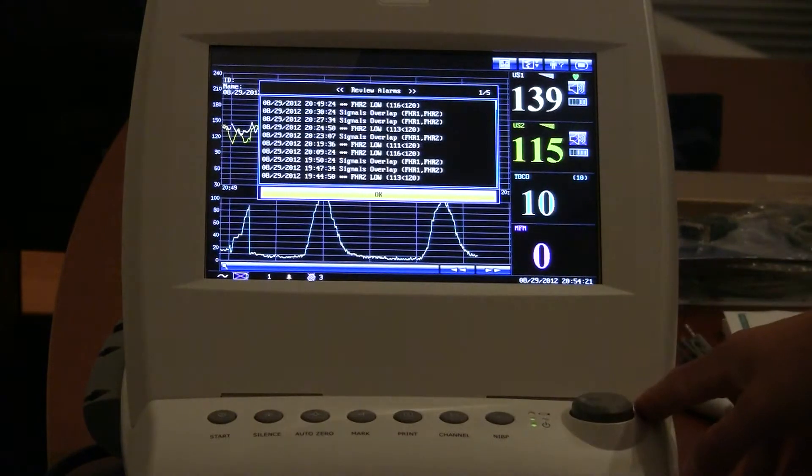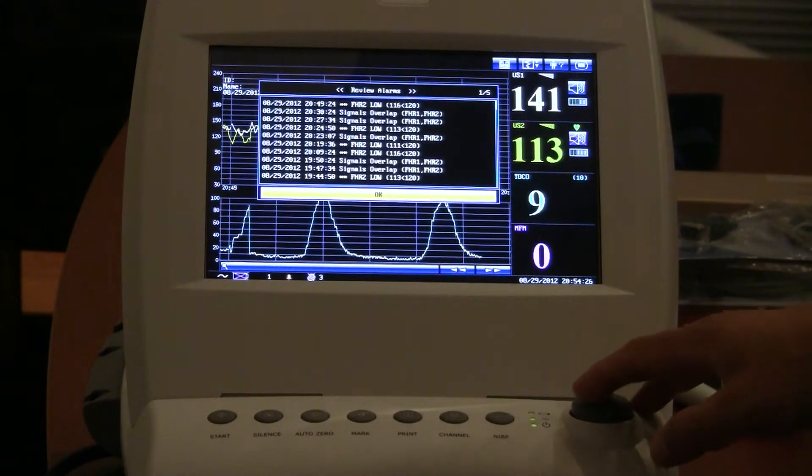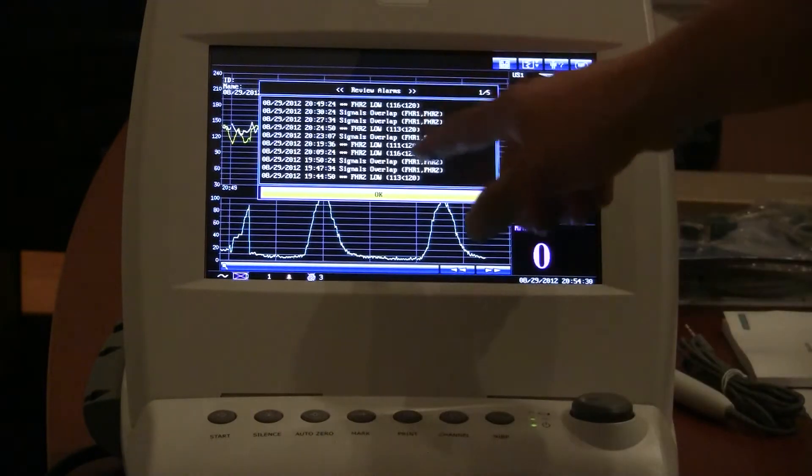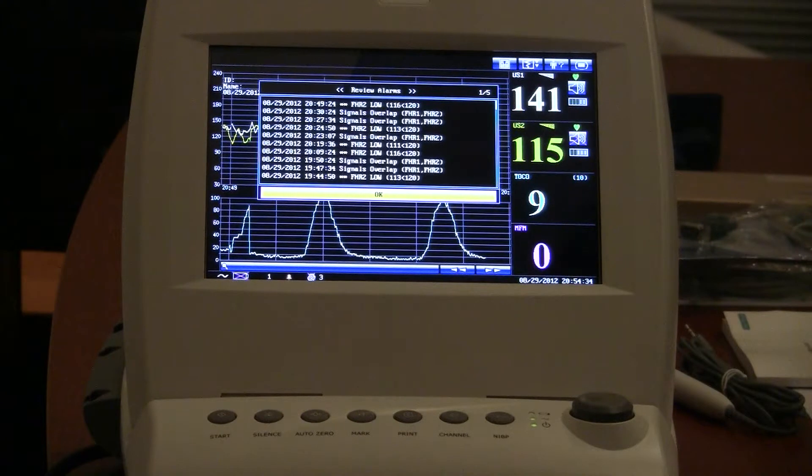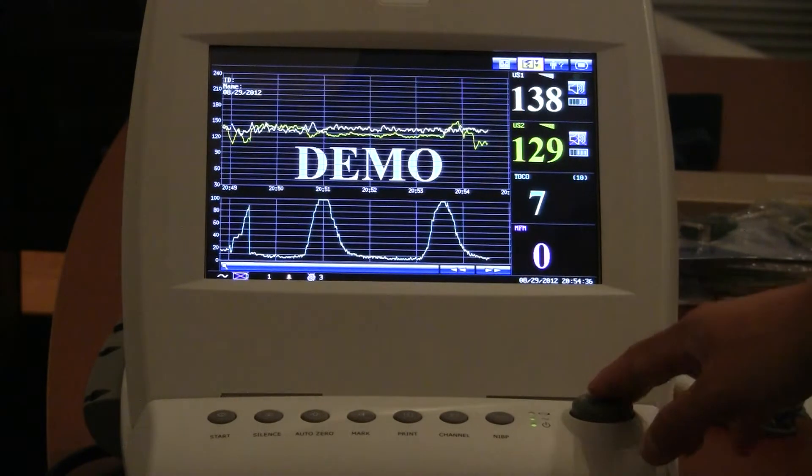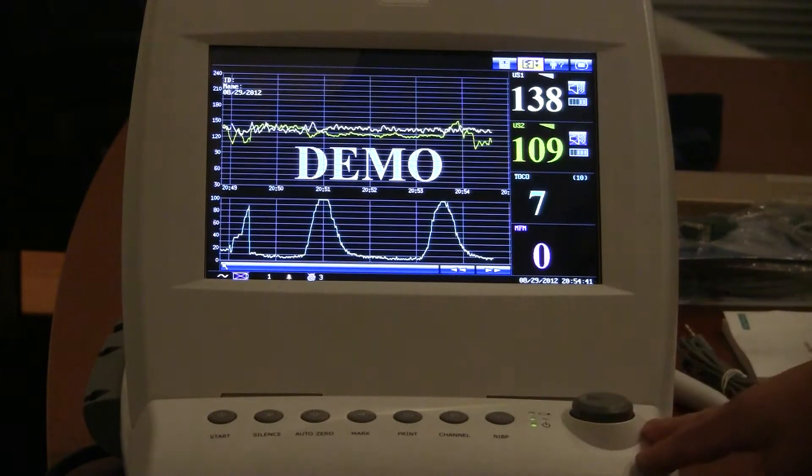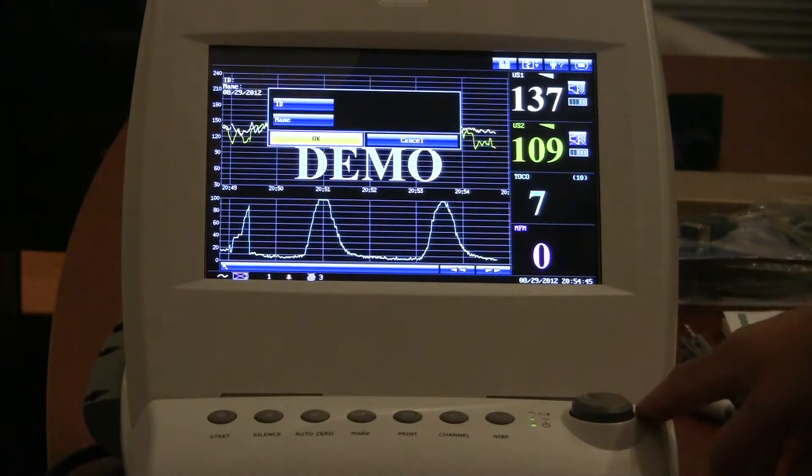This icon right here is your alarm review, so you can quickly click on that button and scroll through all the various alarms that it signaled, and you can set the alarm parameters obviously to your liking. This right here would be your print function. We actually don't have printer paper installed on this, but if you wanted to print, you would highlight that area.